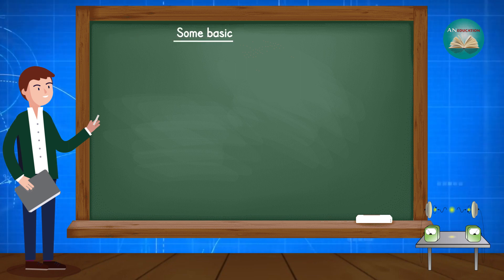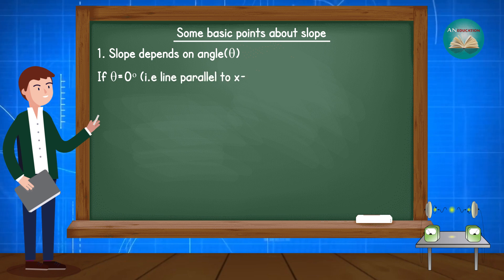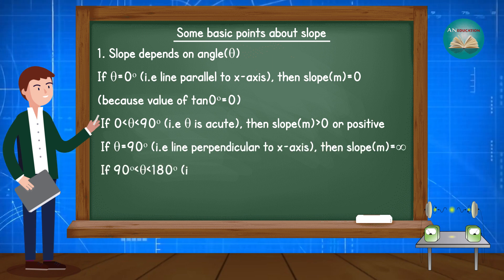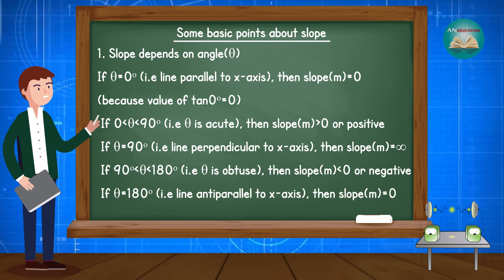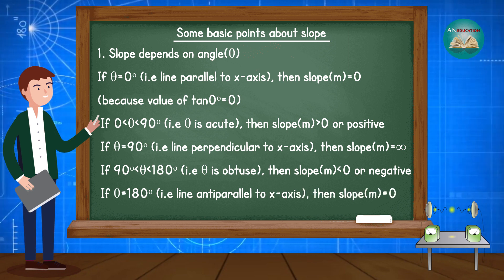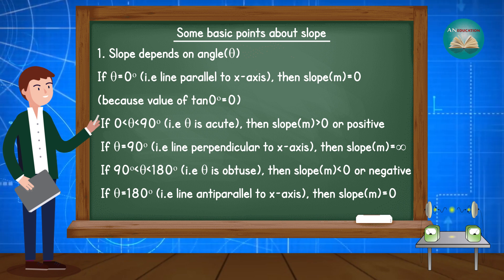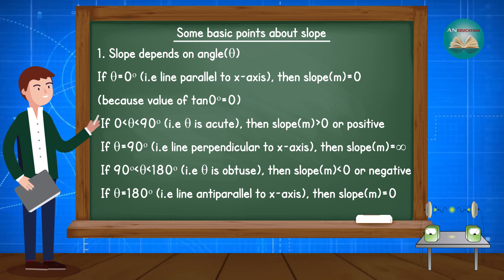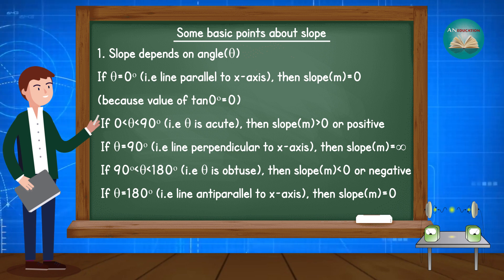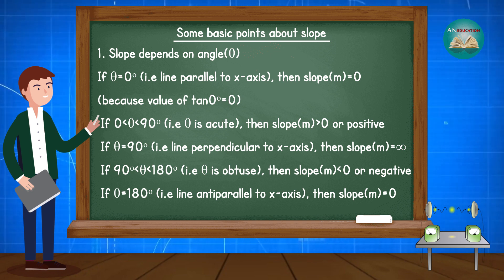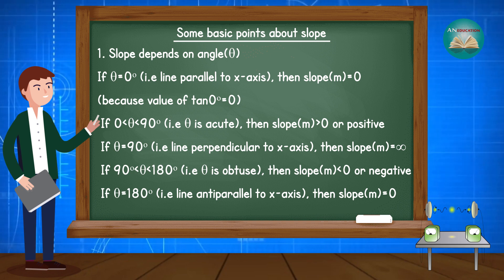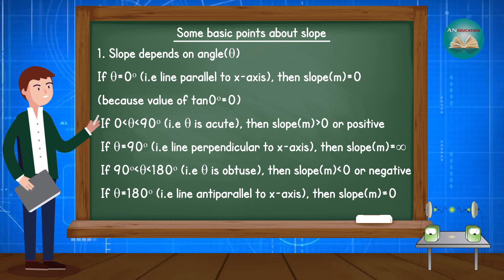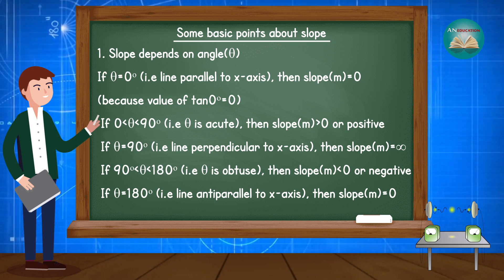Let's discuss some basic points about slope. Slope depends on angle θ. If θ = 0° (line parallel to x-axis), then m = 0, because tan 0° = 0. If 0° < θ < 90° (acute angle), then m > 0 (positive). If θ = 90° (line perpendicular to x-axis), then m = infinite. If 90° < θ < 180° (obtuse angle), then m < 0 (negative). If θ = 180° (line anti-parallel to x-axis), then m = 0. So when θ = 0° or θ = 180°, the slope equals 0.